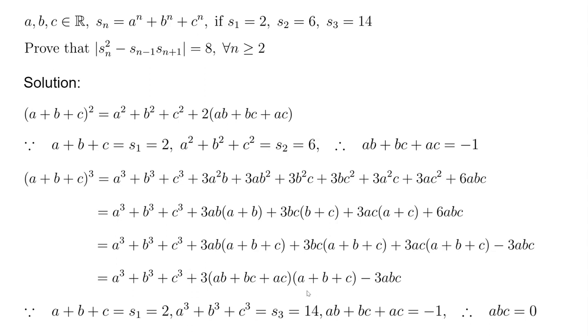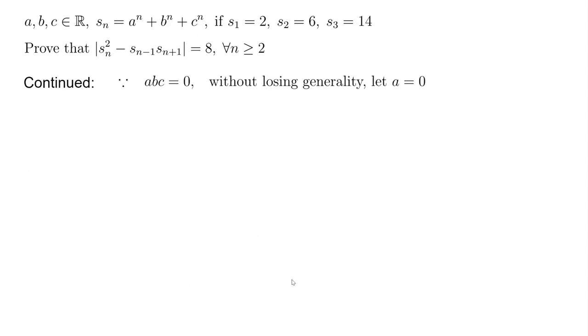If abc is 0, which means at least one of a, b, and c is 0. So without losing generality and using the fact that the expression is symmetric among a, b, c, we can let a equals 0. In this case, you just plug that into s_1, s_2.